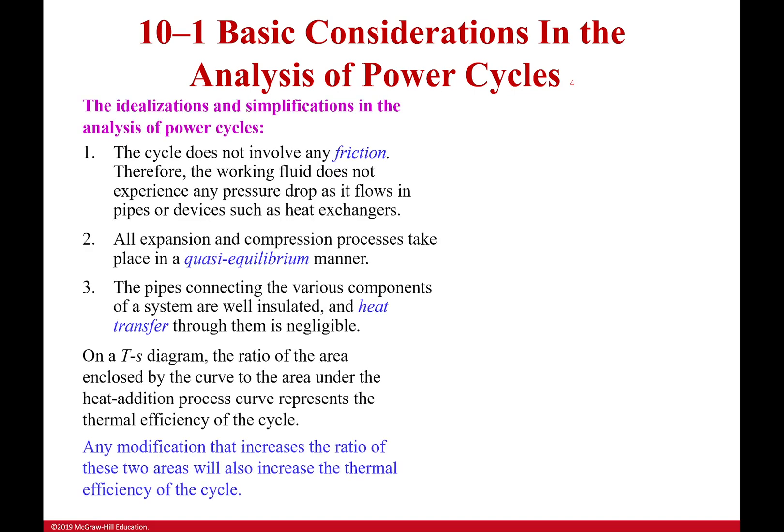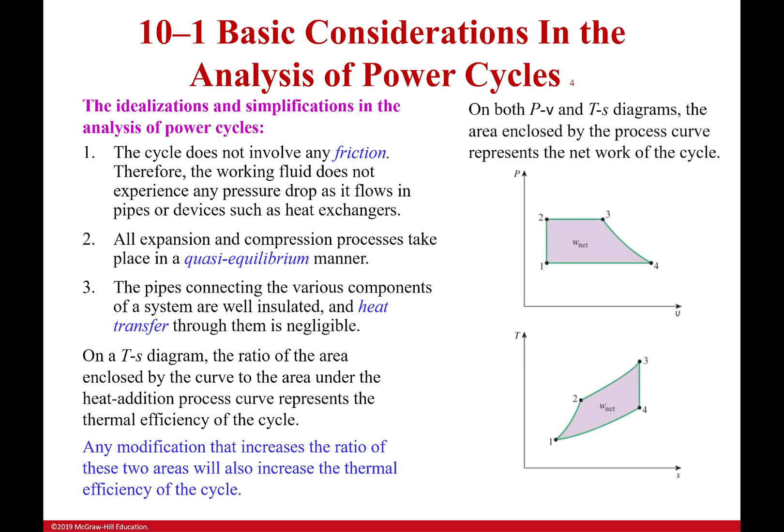Here are some different things we have to take into account with our ideal cycles. First off, no friction. Second, expansion and compression, we're talking about the turbine and the compressor, happen in a quasi-equilibrium manner, which means we're assuming it's happening very slowly and has an equilibrium every little step of the way, which makes it isentropic. We're just more or less assuming isentropic here.